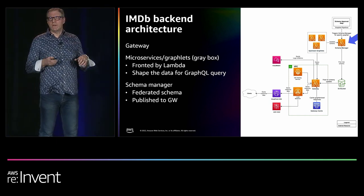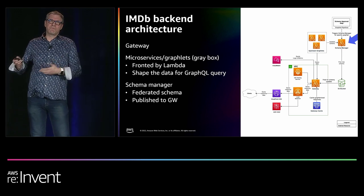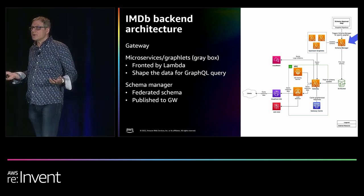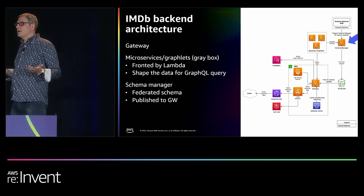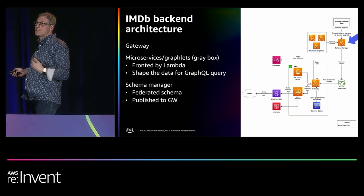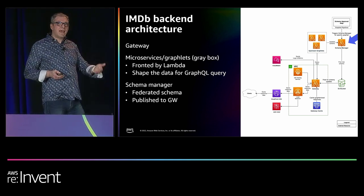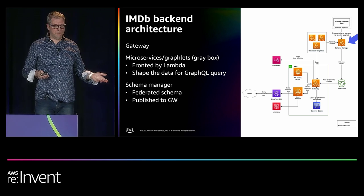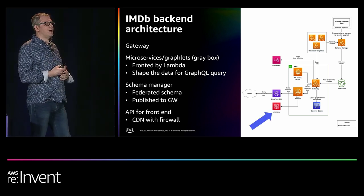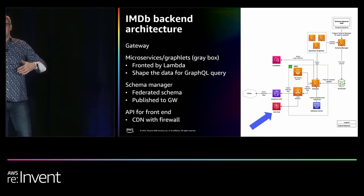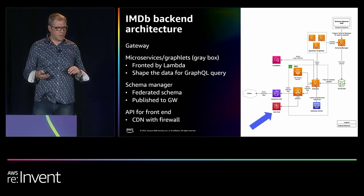Each microservice only knows its piece of the schema, and the gateway needs to know the entire schema — you need a schema manager. When you create a new service or update one, it publishes its piece of the schema to the schema manager, which publishes it into an S3 bucket so the gateway has a full view of the schema. For the API front end there's an application load balancer, a firewall, and a content delivery network — I'll talk more about that later.